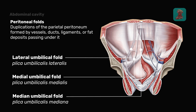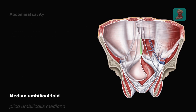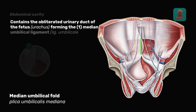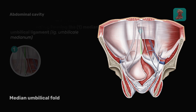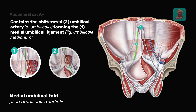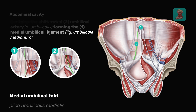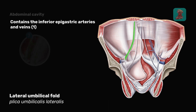The following structures are located on the anterior abdominal wall: the median umbilical fold, which contains the closed urinary duct of the fetus or urachus, forming the median umbilical ligament; the medial umbilical fold, which contains the closed umbilical artery, forming the medial umbilical ligament; and the lateral umbilical fold, which contains the inferior epigastric arteries and veins.